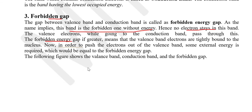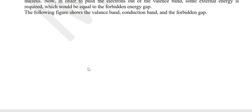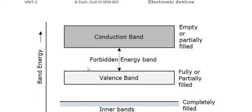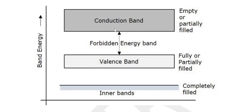This figure shows the energy band structure: valence band, conduction band, and the forbidden energy gap. The inner bands of the atom are shown here. The electron remains in the valence band, which is the most occupied energy level band. The conduction band is responsible for current conduction.